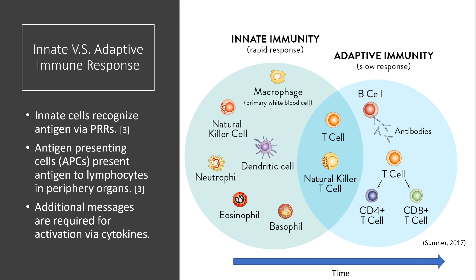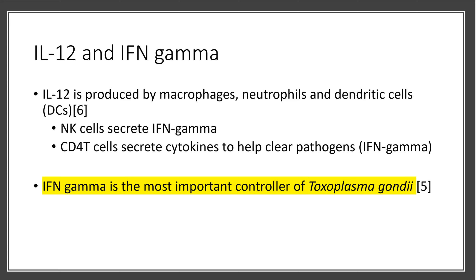Innate immunity acts first and then transitions into adaptive immunity. Innate cells take up antigen and pathogens via pattern recognition receptors and then present these antigens to T cells, helping activate them and enabling them to recognize and clear the pathogen. However, simply presenting the antigen is not the only thing necessary for T cells to become fully activated — additional messages are also required, and some of these are presented through cytokines.